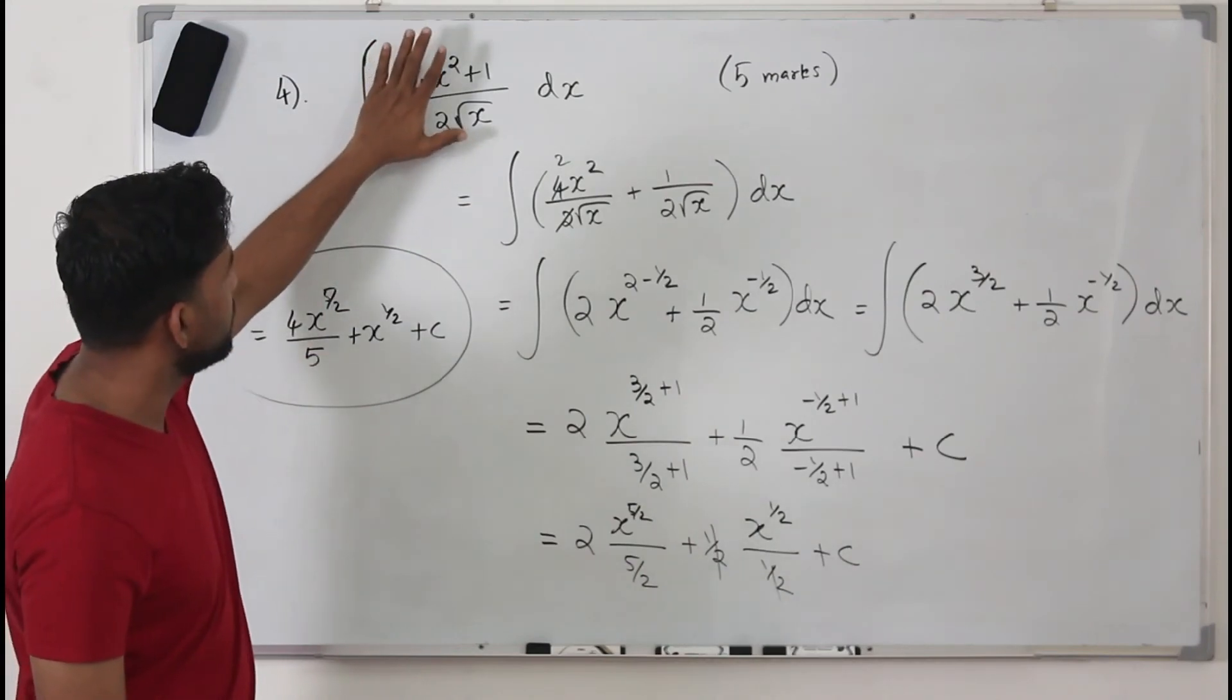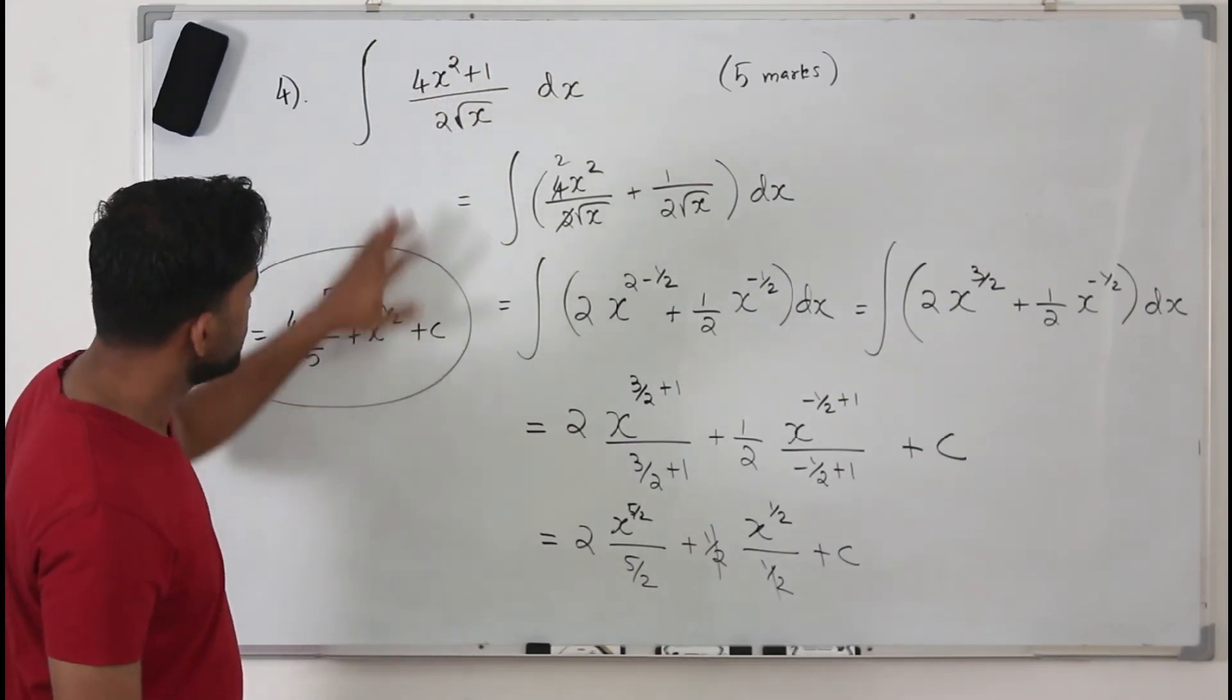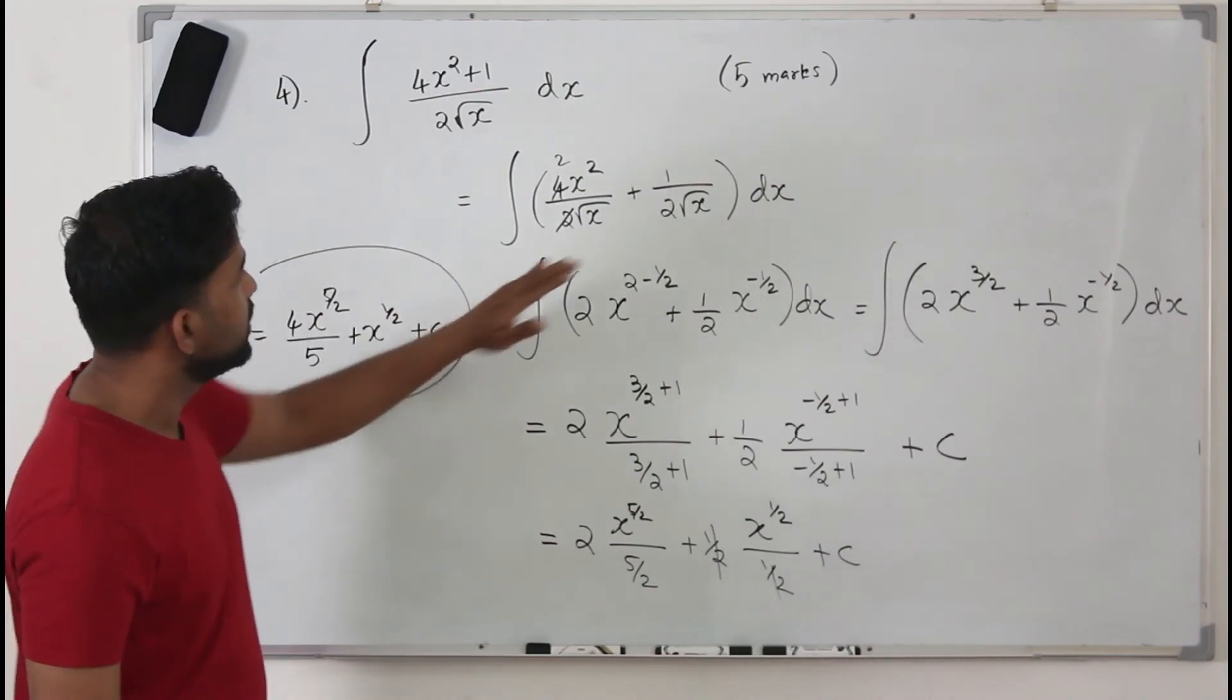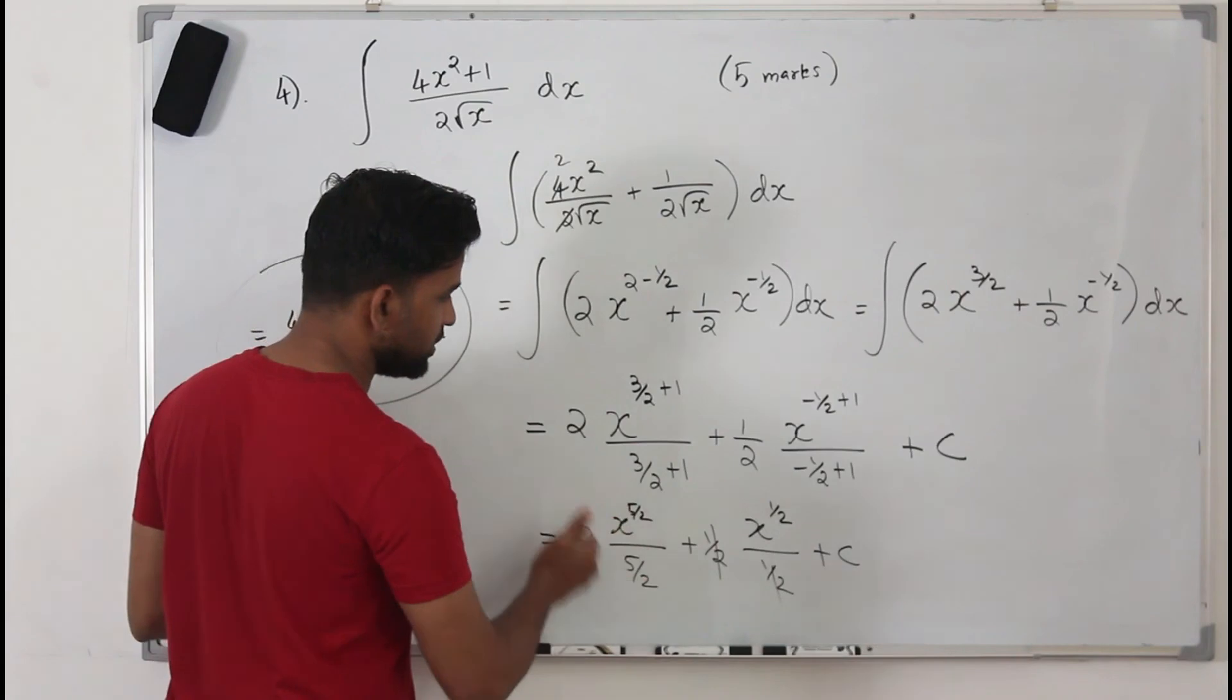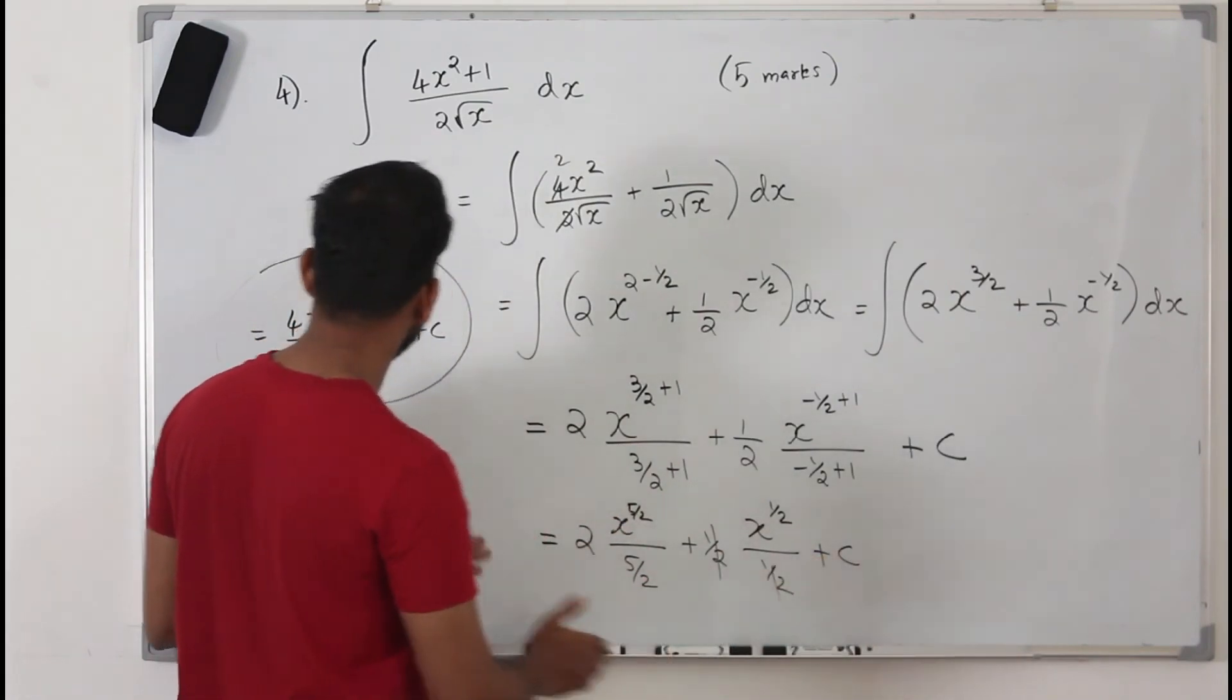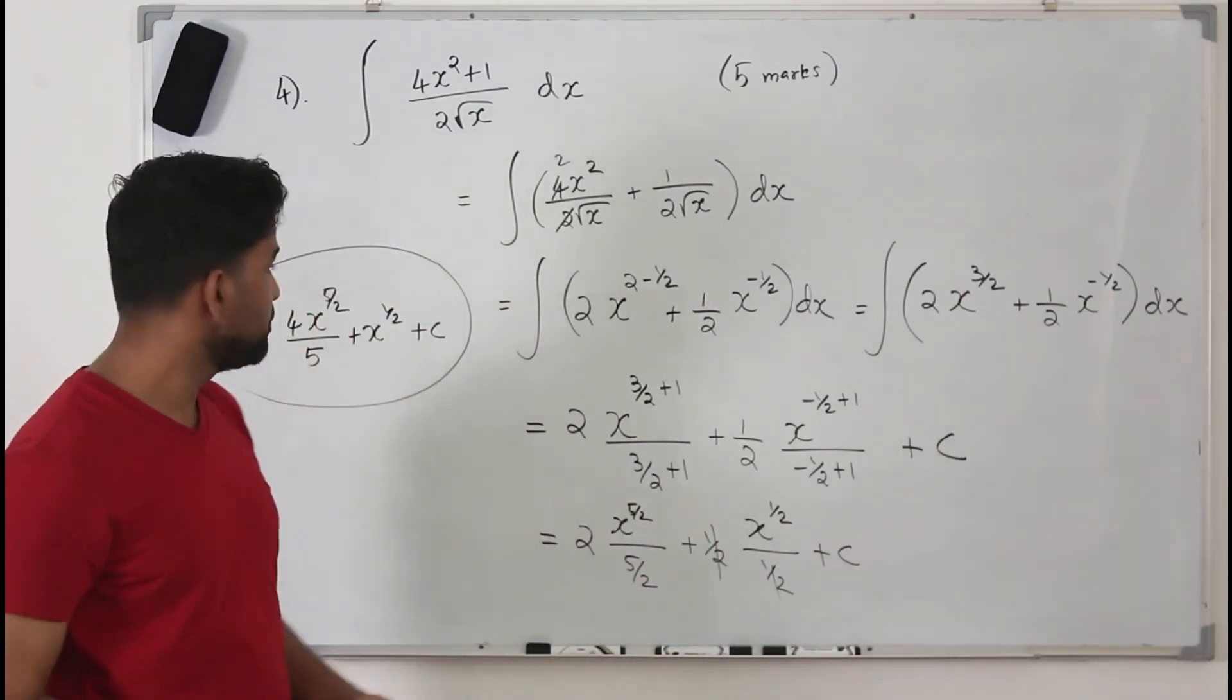That's the integration of this given integrand, this given function. So if you do this properly, you get 5 marks. If you want to score this complete 5 marks, you need to simplify this. You cannot just leave it here. You need to simplify this and write your answer in the most simplified form.